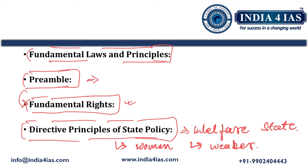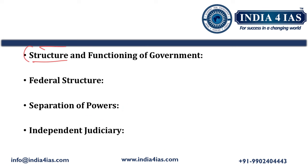Now we should transition to the structure and functioning of the government. This largely reflects the governance aspect. First, we should address the federal structure of the constitution — examining the unitary features and federal features, and why there is a bias towards the unitary feature in the Indian constitution. We should also address the balance of powers between central and state governments, reflecting the need for unity and diversity.